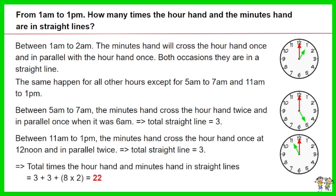Total times the hour hand and minutes hand in straight lines equals 3 plus 3 plus 8 times 2. The answer is 22.